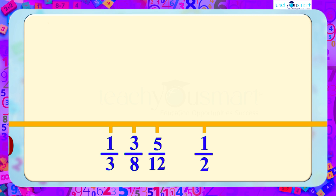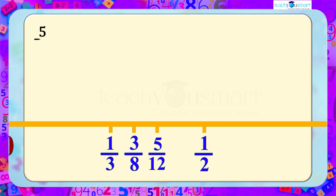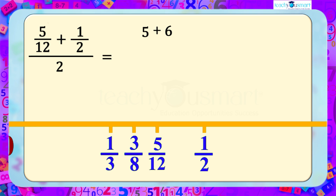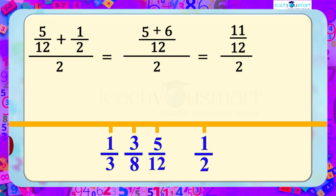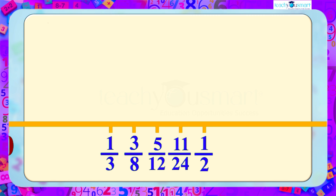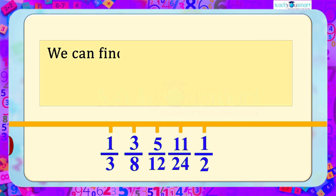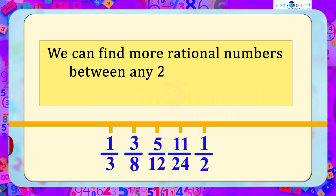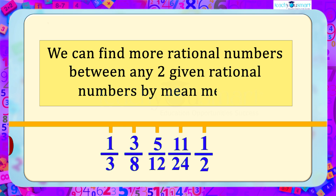Also, take the mean of 5/12 and 1/2: (5/12 + 1/2) / 2 = (5/12 + 6/12) / 2 = (11/12) / 2 = 11/24. Similarly, we can find more rational numbers between any two given rational numbers by the mean method.